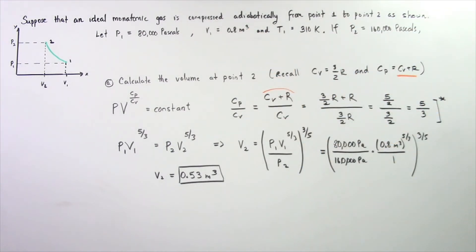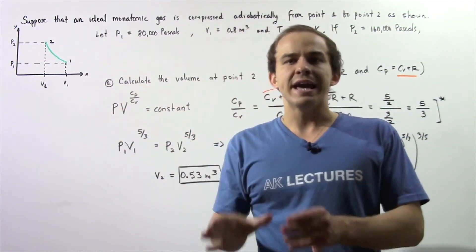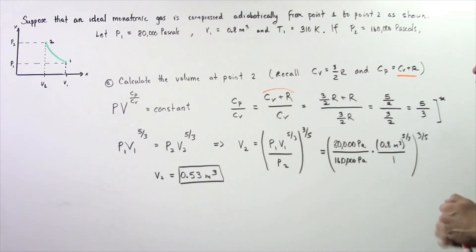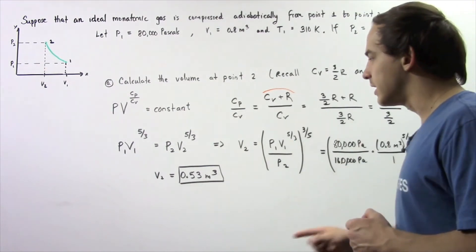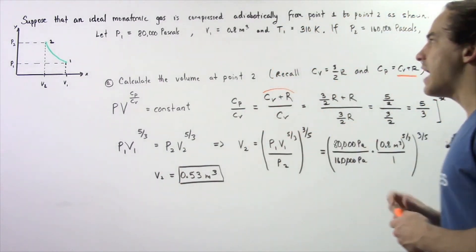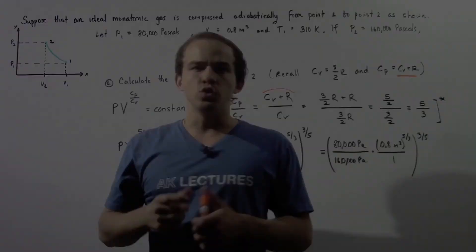Notice we didn't actually have to use the temperature because this equation only relates volume and pressure of an adiabatic and slow expansion. We plug in our values into our calculator and we get approximately 0.53 meters cubed as the volume of our ideal monatomic gas at position 2.